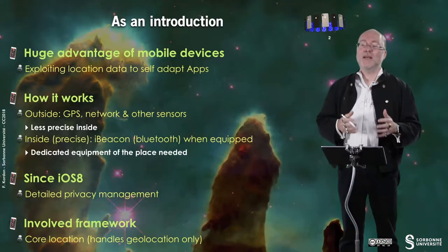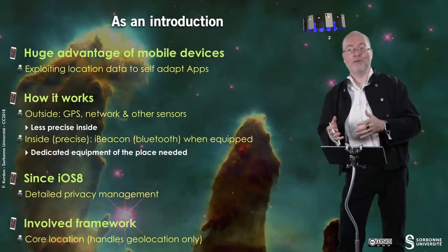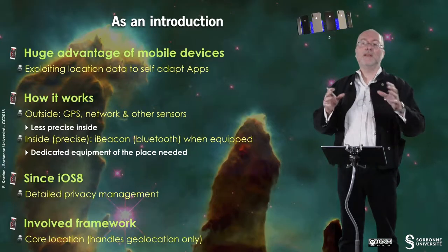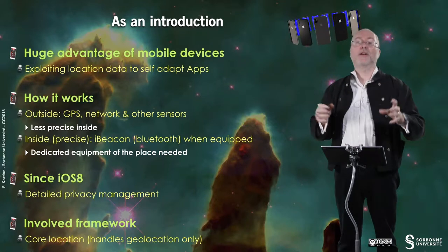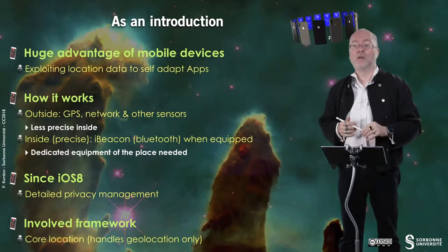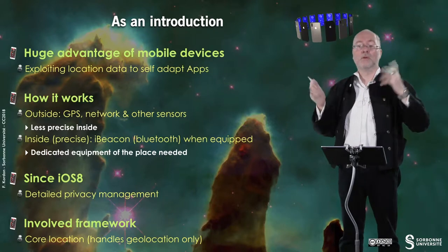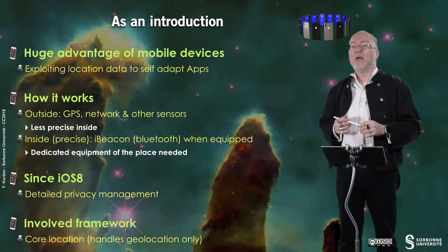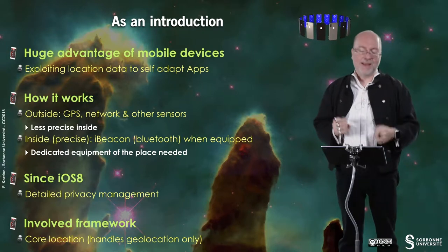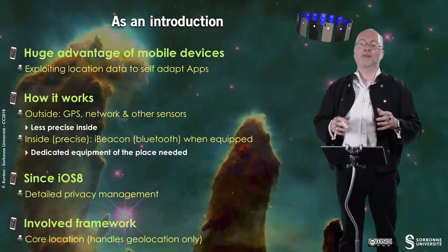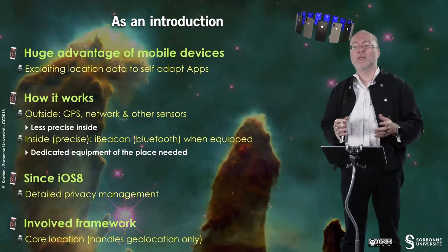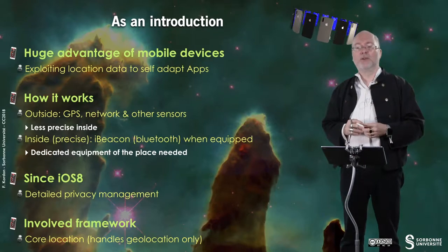You can also have geolocation inside. Of course, GPS will not work very well, but you can still triangulate your position thanks to the surrounding networks. Inside, there is also a precise mode that requires some equipment, which is called eBeacon.